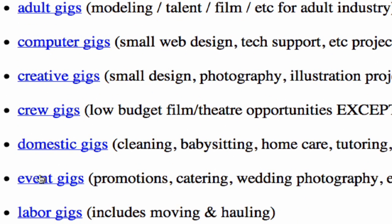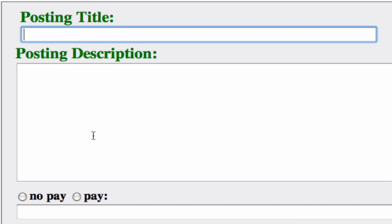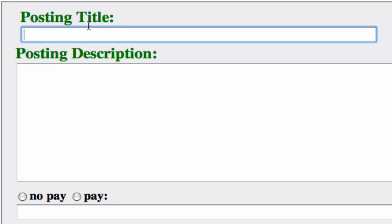Down below there are different types of things you can do: crew gigs, creative gigs, computer gigs, domestic gigs. We're going to event gigs because that's what they list for wedding photographers. We're going to select the county we're in because that's going to get the local people closest to finding us easily.